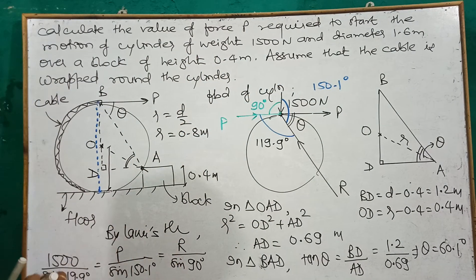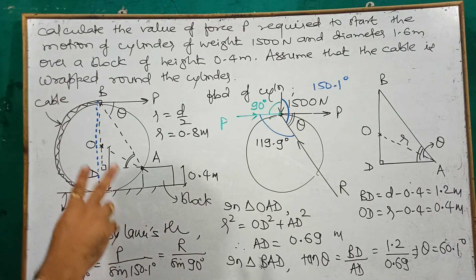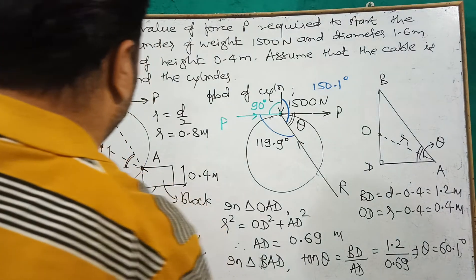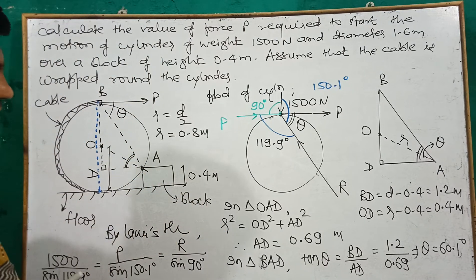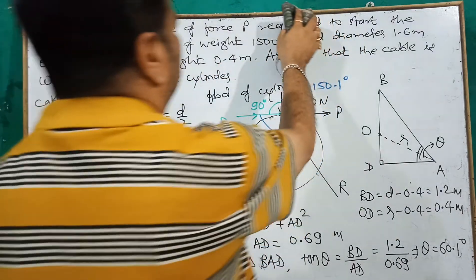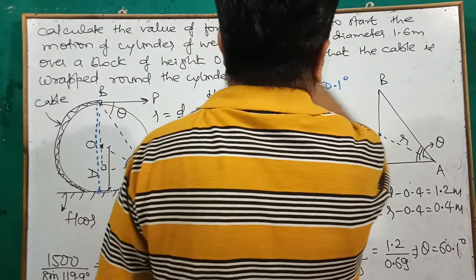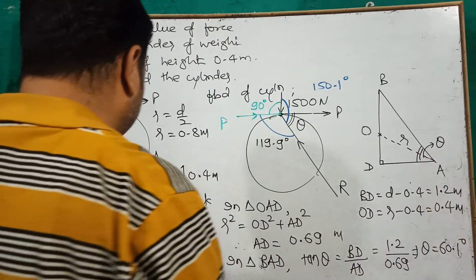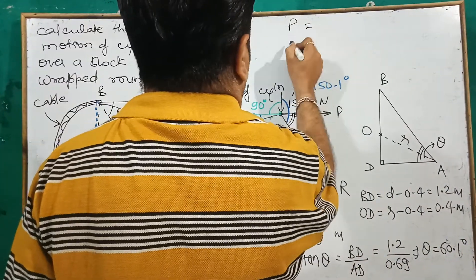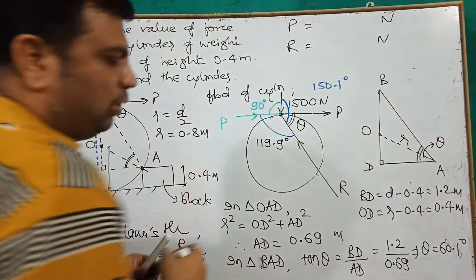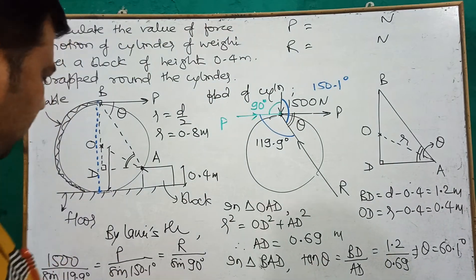We will solve this for values of P as well as R. If you solve for P and R values, you will get both values — one value will be P and one will be the reaction R. These two values are to be calculated.